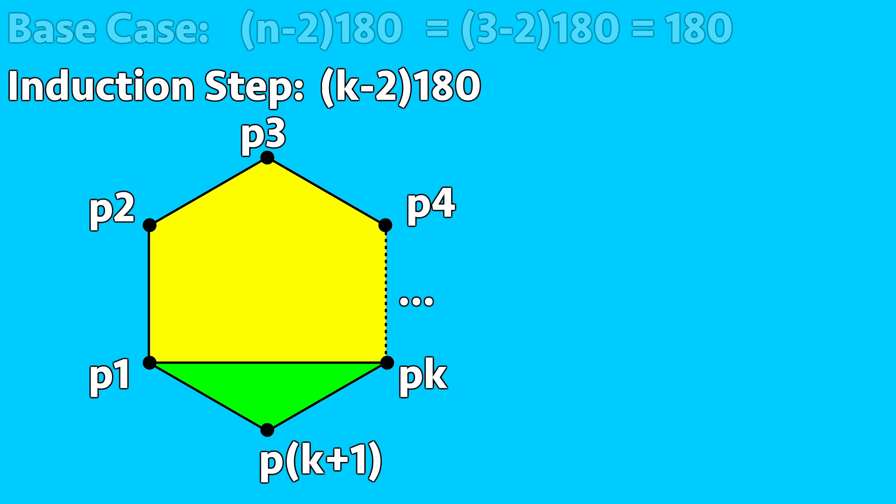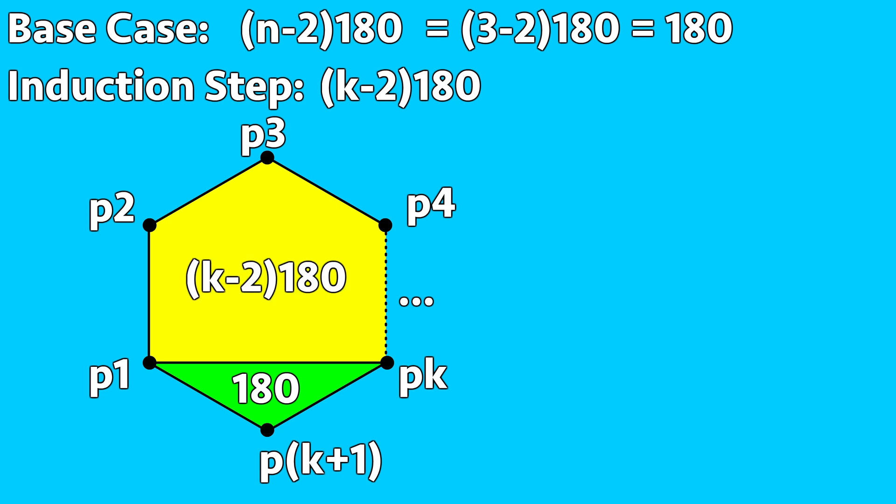The green triangle has a sum of 180 degrees. This is what we showed in the base case. The other polygon has k points, which means the sum is assumed to be (k-2) times 180 degrees.